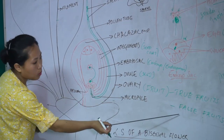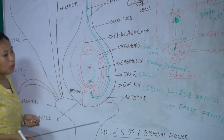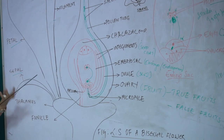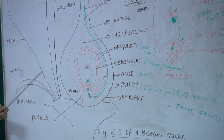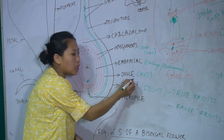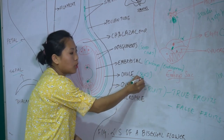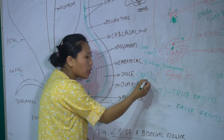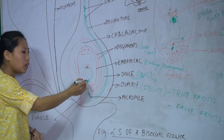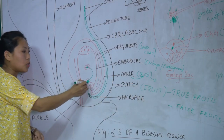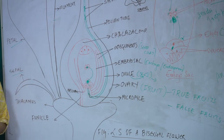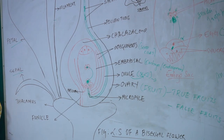When the fruit develops from the ovary alone it is called a true fruit, but when accessory parts like the sepal, petal, or even the stamen help in the formation of the fruit, it is called a false fruit. Once the fruit is matured, it is shed off, consumed, and the seed is sown into the soil where it germinates and repeats the whole cycle of sexual reproduction in flowering plants again.